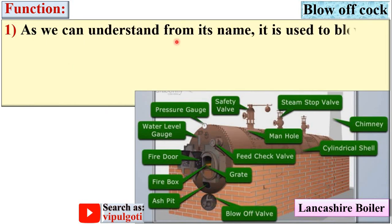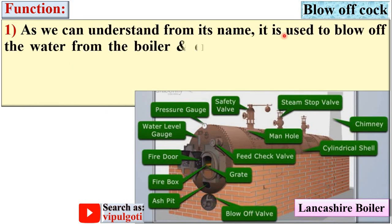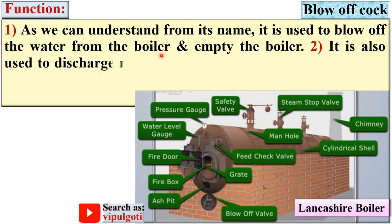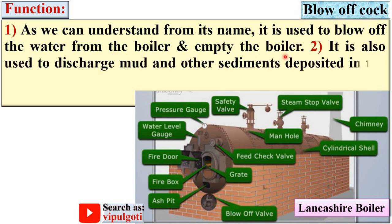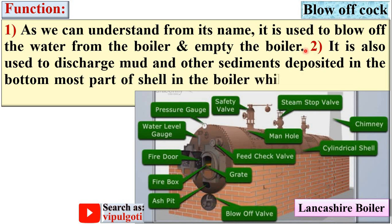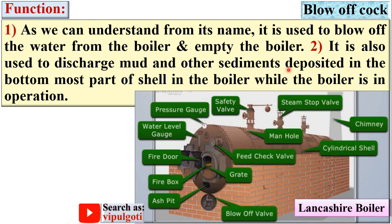The first function of the blow-off cock: as we can understand from its name, it is used to blow out the water from the boiler and empty the boiler. The second function: it is also used to discharge mud and other sediments deposited in the bottommost part of the boiler shell while the boiler is in operation. So if you want to discharge mud and sediments during the working of the boiler, you can use the blow-off cock.